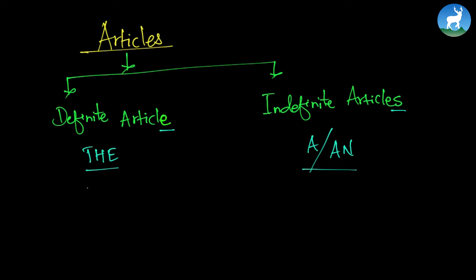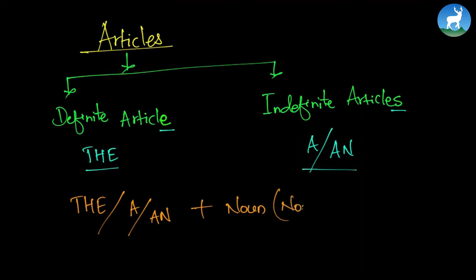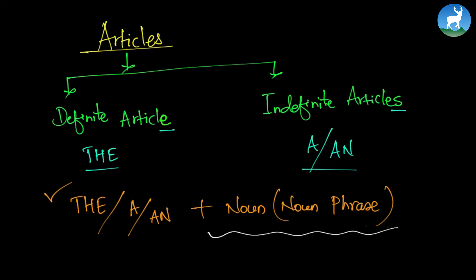Articles are always followed by a noun or a noun phrase. So a or an is always followed by a noun, and most of the time a noun phrase. Articles are followed by a noun or a noun phrase.